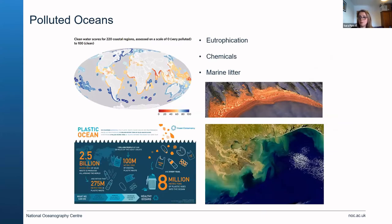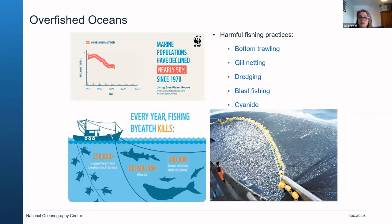The oceans are also becoming more polluted. Clean water scores from 220 coastal regions show the most polluted areas in red and least polluted in blue. Oceans get polluted by plastic, nutrients, and chemicals. The oceans are also being overfished — marine populations have declined more than 50% since the 1970s, and 90% of fish stocks are overfished and over-exploited. It's not just commercial species; millions of marine animals are killed as bycatch, like turtles and sharks. Wild fish populations are decreasing while human dependence on fish as a food resource is increasing.